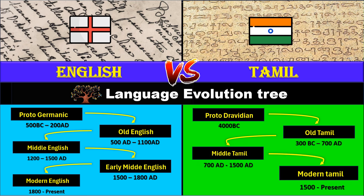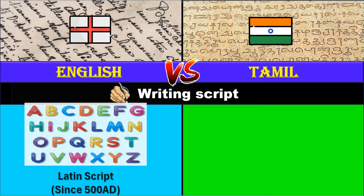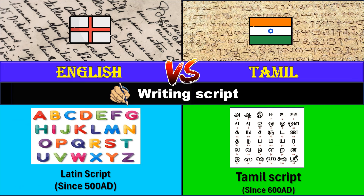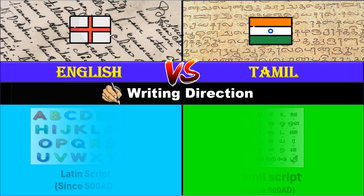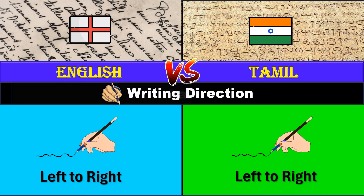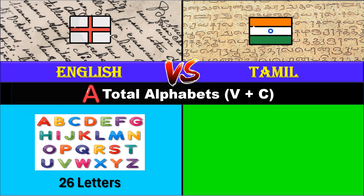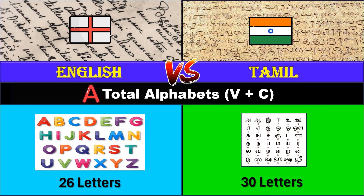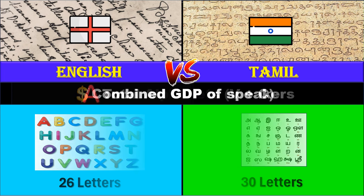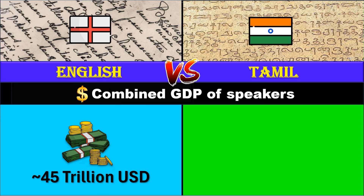Writing script: Latin script for English, Tamil script for Tamil. Writing direction: both languages are written from left to right. Total alphabets: 26 letters for English, 30 letters for Tamil. Combined GDP of speakers: around 45 trillion US dollars for English speakers, around 400 billion US dollars for Tamil speakers.